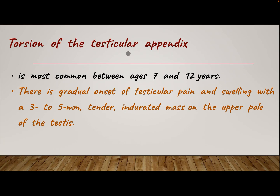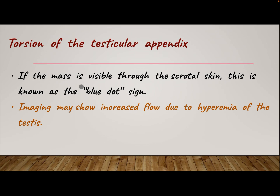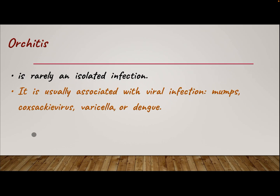Torsion of the testicular appendix is most common between ages 7 and 12 years. There is gradual onset of testicular pain and swelling with a 3 to 5 mm tender indurated mass on the upper pole of the testis. If the mass is visible through the scrotal skin, this is the blue dot sign. Imaging may show increased flow due to hyperemia of the testis.